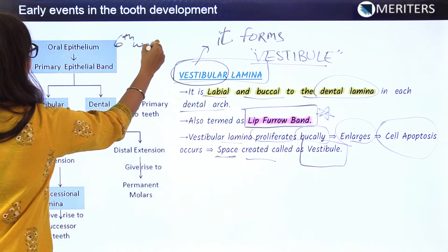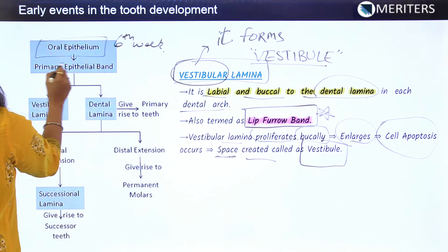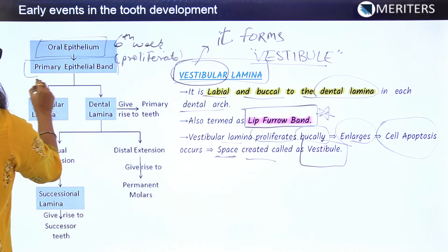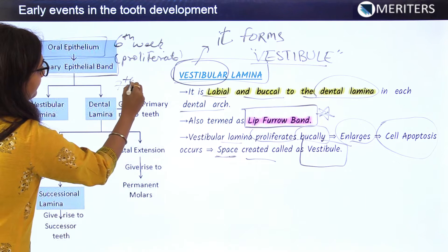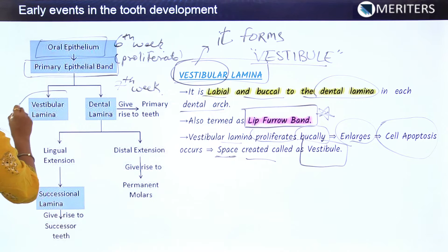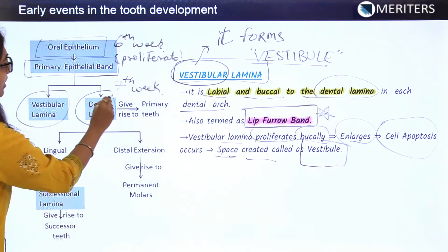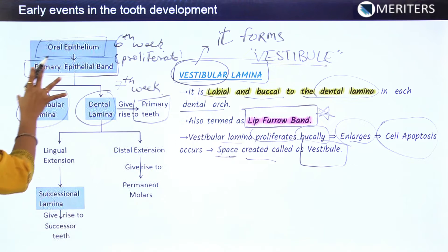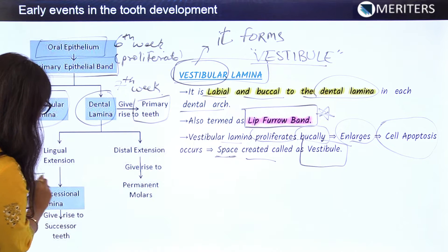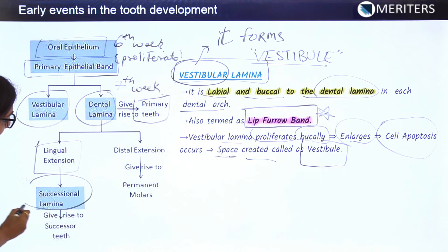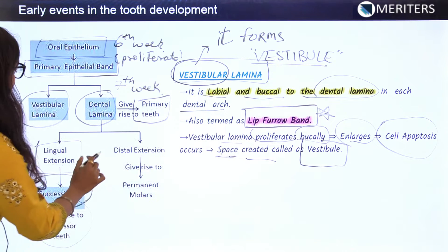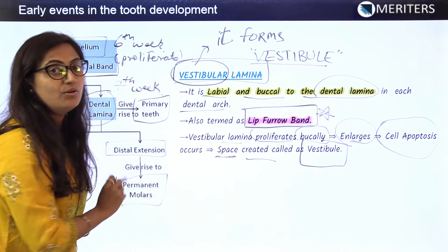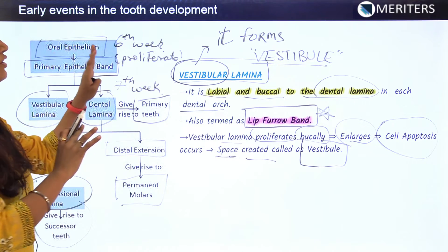To summarize: at around the sixth week, basal cells of the oral epithelium proliferate to form the primary epithelial band. At the seventh week, this band divides into the vestibular lamina (buccal process) and dental lamina (lingual process). The dental lamina gives rise to primary teeth. It further has two extensions: the lingual extension, or successional lamina, which gives rise to successor teeth, and the distal extension, which gives rise to permanent molars.